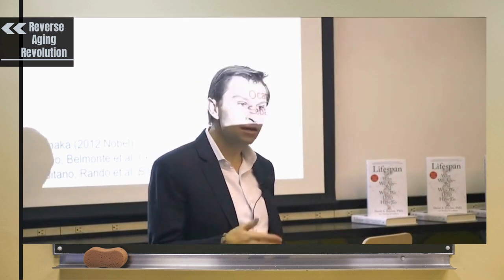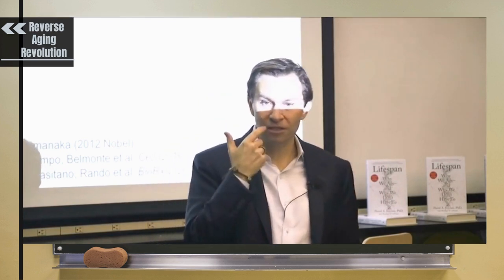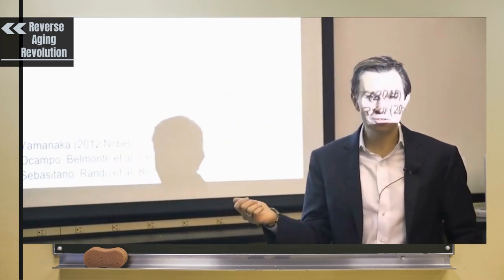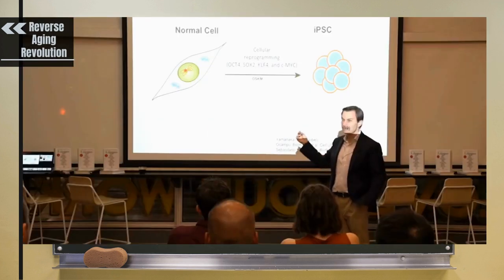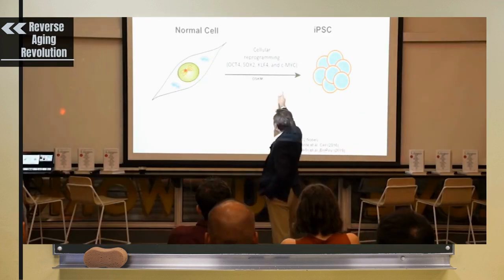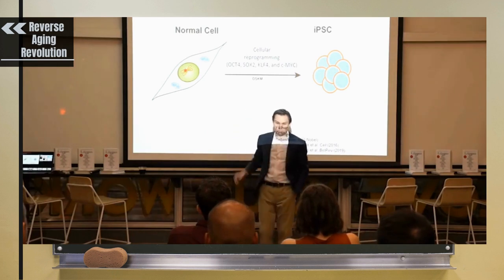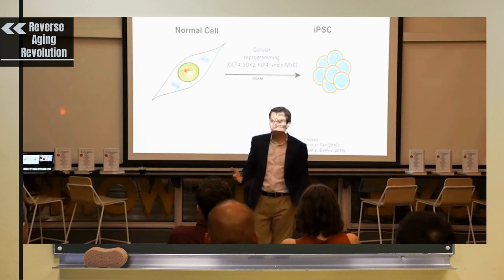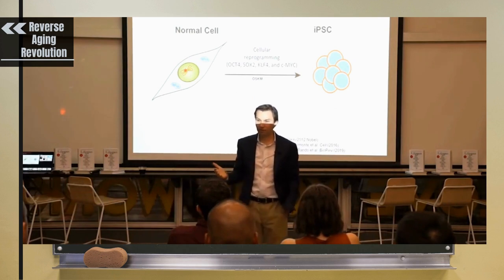So quite simply, any high school student could take one of your skin cells in your mouth, take it back to my lab or even to the high school lab, put in these four genes from Yamanaka, which we call OSK and M for short, and those cells, many of them would become stem cells.